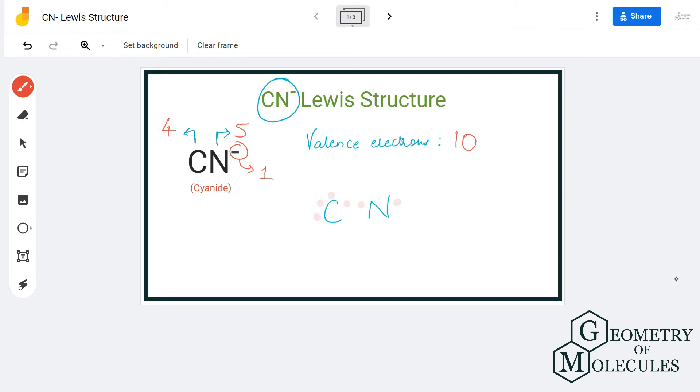After placing one single bond, the octets of neither of these atoms is complete because it should have eight valence electrons in its outer shell to attain a stable structure. But this is not happening here.